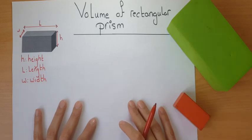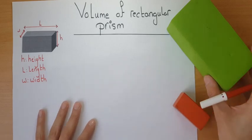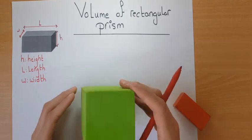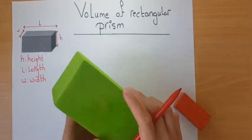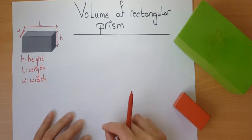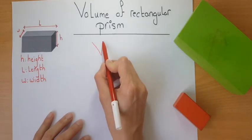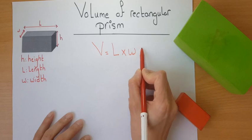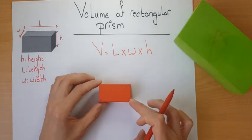Now let's move to the second regular shape — we want to measure the volume of a rectangular prism. This is an example of a rectangular prism. It doesn't have equal sides like a cube. The volume of a rectangular prism equals the length times the width times the height.